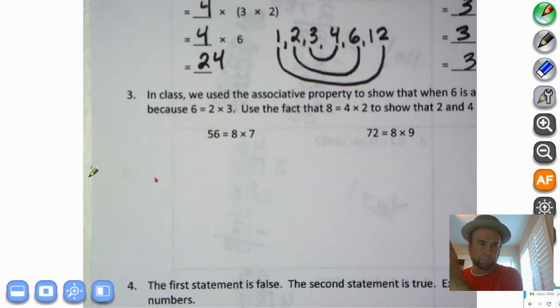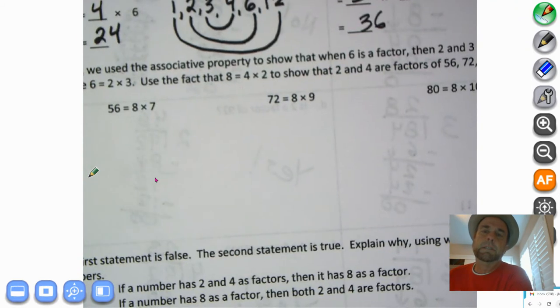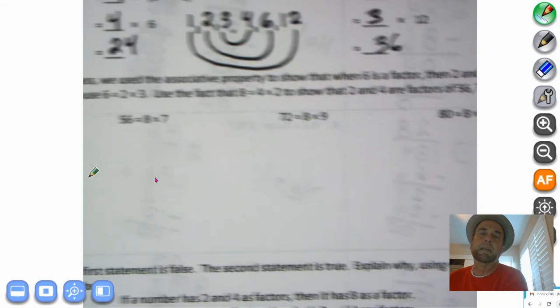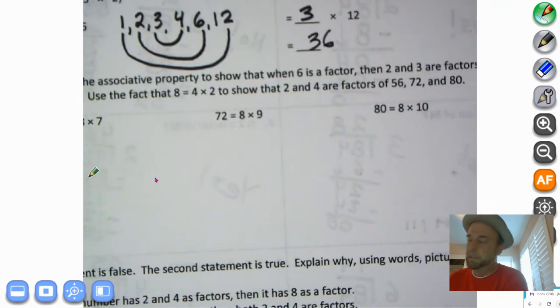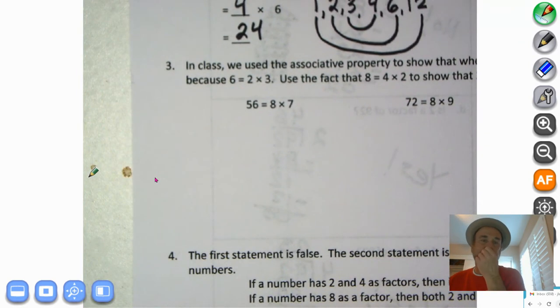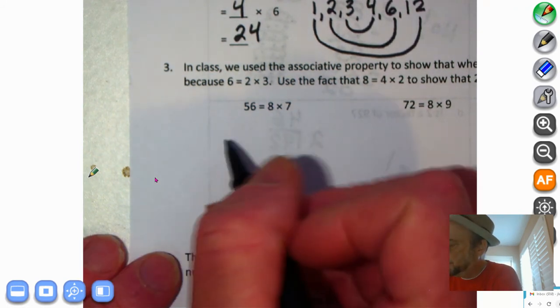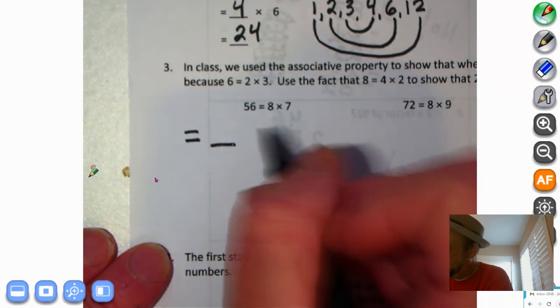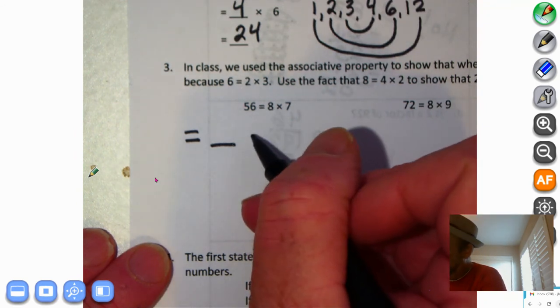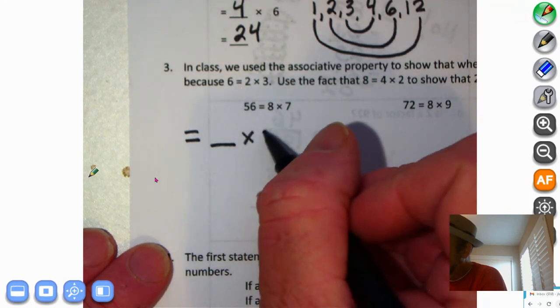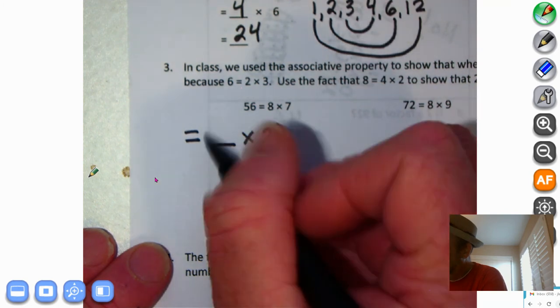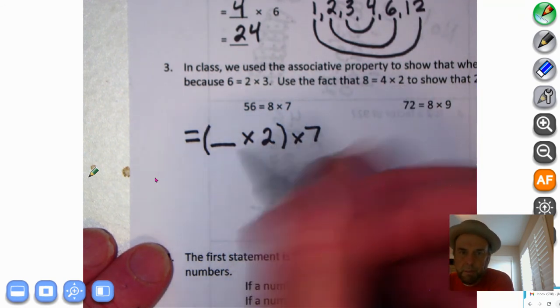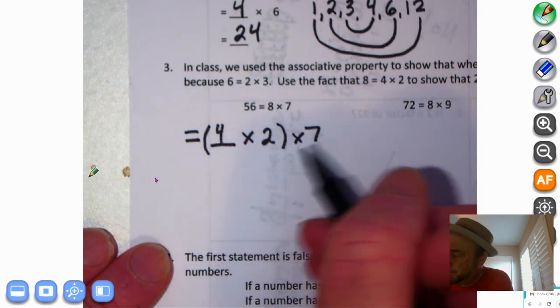Let's try to do that again. We'll get number 3. In class, we use the associative property to show when 6 is a factor, then 2 and 3 are also factors, because 6 equals 2 times 3. We're going to use the fact that 8 equals 4 times 2 to show that 2 and 4 are factors of 56, 72, and 80. So 56 equals 8 times 7. We'll put 4 times 2 in parentheses, times 7. So we're proving that 4 and 2 are factors also. And they are. 4 times 2 equals 8. 8 times 7 would equal 56.